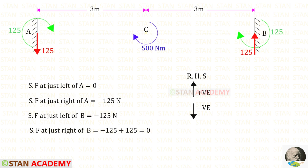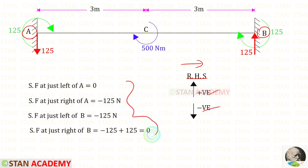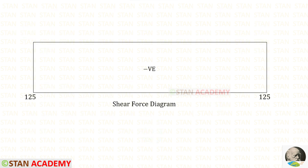Now let us find the shear force values. We will find them from point A towards point B. In this case we have to follow the right hand side rule: upwards will be positive and downwards will be negative. Using this rule we can find the shear force values. Here you can see the shear force diagram.